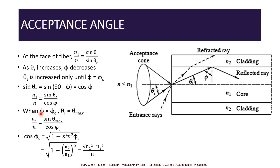If the angle of incidence on the core-cladding interface is the critical angle, the angle of incidence into the fiber θi will be the maximum possible value at which light can enter — that is θmax. At φc, θi = θmax, and Snell's law gives n1/n = sin θmax / cos φc. The cosine term can be rewritten as √(1 − sin²φc). Since sin φc = n2/n1, substituting gives cos φc = √(n1² − n2²) / n1.